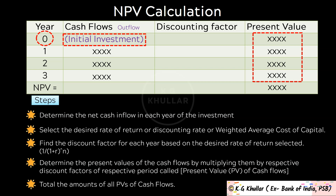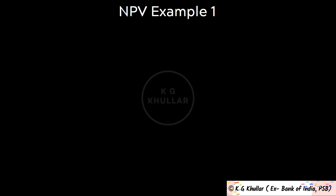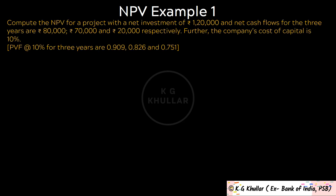Let's do a simple example. Compute the NPV for a project with a net investment of Rs. 1,20,000 and net cash flows for 3 years of Rs. 80,000, Rs. 70,000, and Rs. 20,000 respectively. The company's cost of capital is 10%. The present value factors at 10% for years 1, 2, and 3 are 0.909, 0.826, and 0.751.